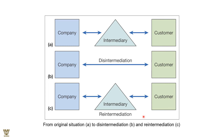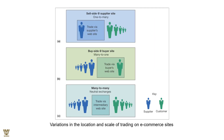There are different trading site models: a sell site or supplier site where trade is via one supplier website with many buyers; a buyer site where trade is via the buyer's website with many suppliers; and neutral exchanges where both parties transact through an intermediary website. These represent the key structures for B2B electronic trading.